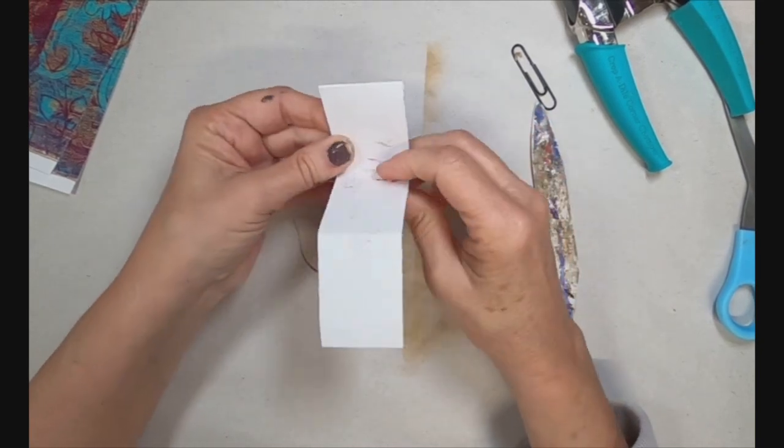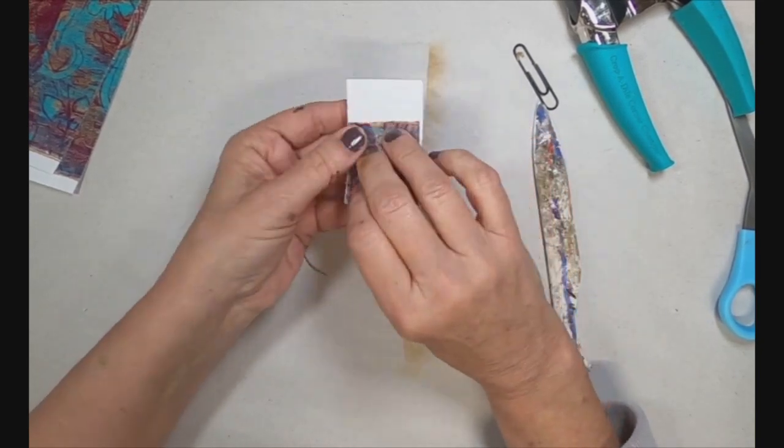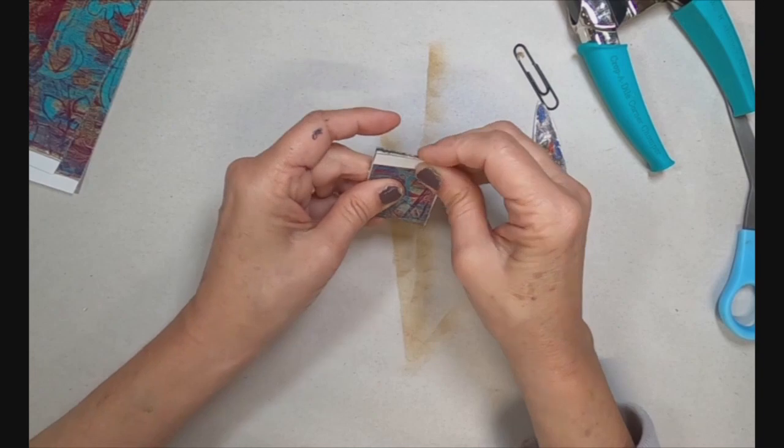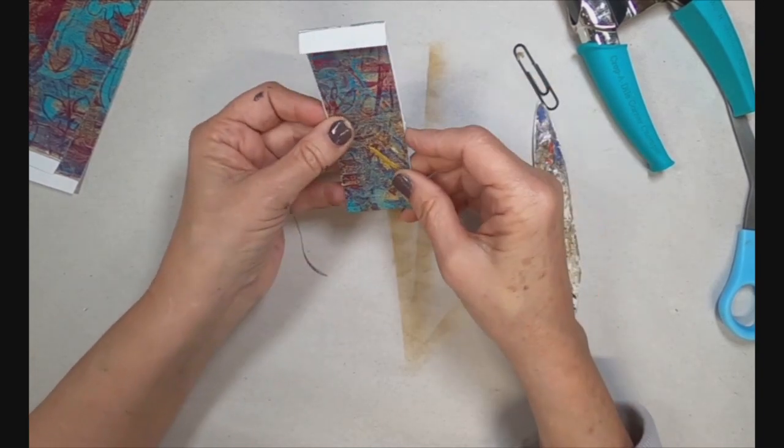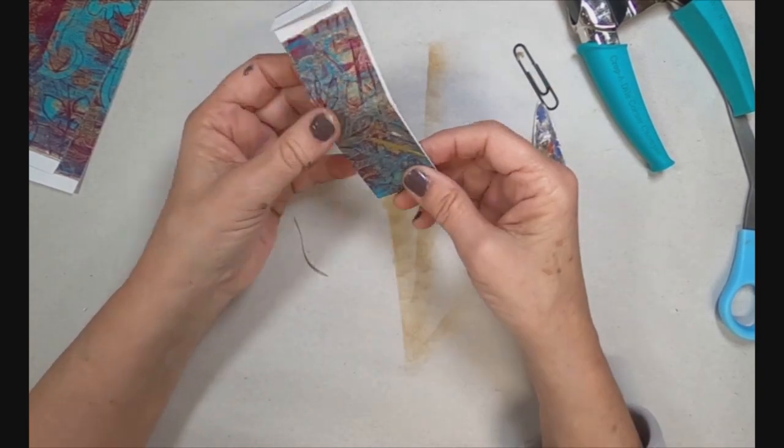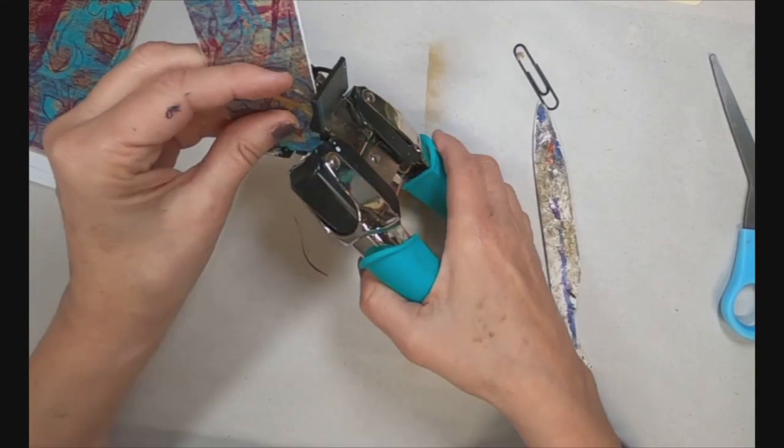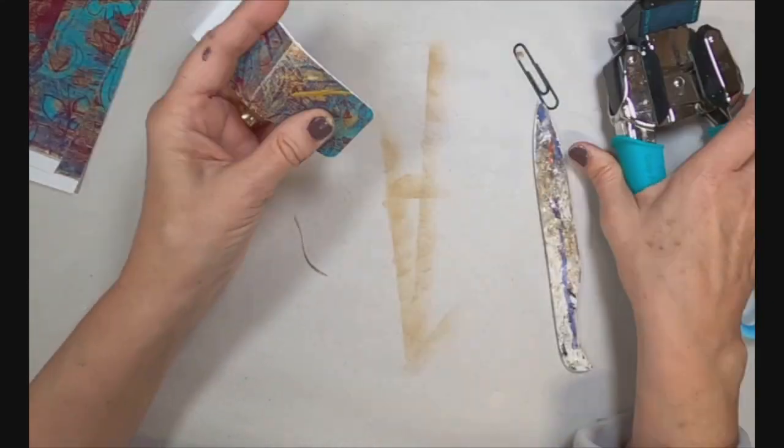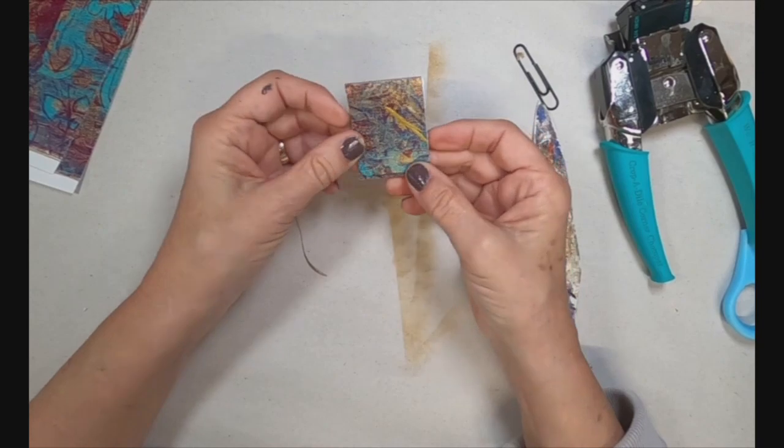Now let's just put some together. So this is my gel press print. And I did the same thing that I did with that plain white copy. Now I'm going to go in and just decorate it up a little bit more.